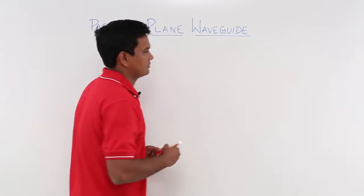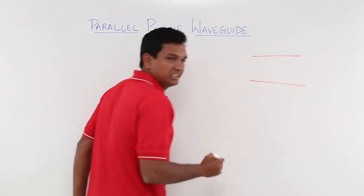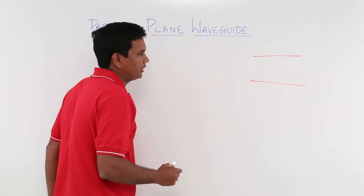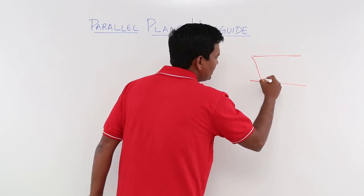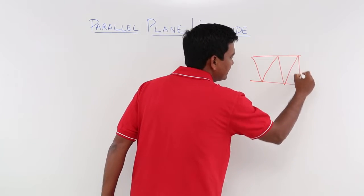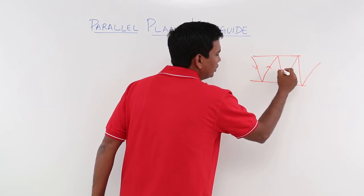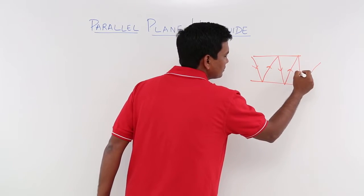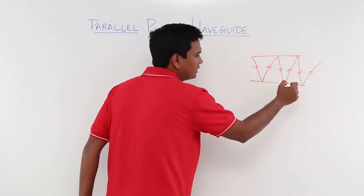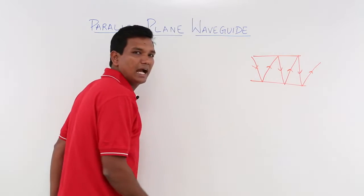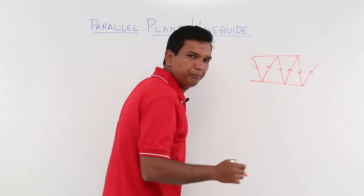Let me draw this. Let us say that I have two plates here, and I have an EM wave. I want the EM wave to hit between the plates and reach the other end. So it will be like a zigzag motion — it will hit here, reflect back, again it will hit here. This process will keep on going and the wave will travel from the starting point to the end point.